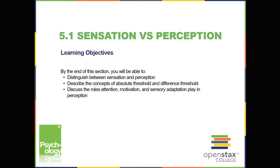While our sensory receptors are constantly collecting information from the environment, it's ultimately how we interpret that information that affects how we interact with the world. Perception refers to the way sensory information is organized, interpreted, and consciously experienced. Perception involves both bottom-up and top-down processing. Bottom-up processing refers to perceptions being built from sensory input, while top-down processing means our interpretations are influenced by our available knowledge, experiences, and thoughts.